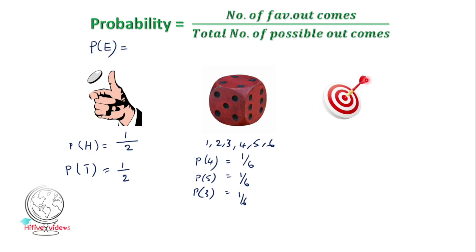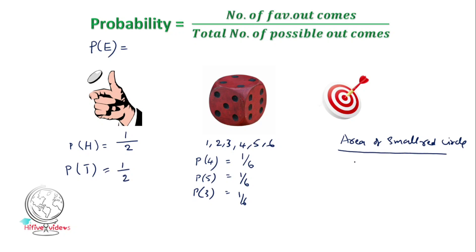In that circle, the probability of getting into the red area is the area of the small red circle divided by the total area of the dot board. This square area divided by the total dot board. The dot board has two points. If we divide that area, we will find the probability in the red region.